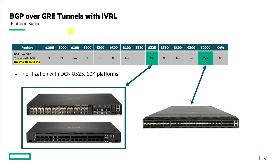This slide covers the platform support for the feature — BGP over GRE tunnels with IVRL. This is new to the 10.14.1001 release. We prioritized support with the 8325 and the 10K platforms pictured here. Campus switches don't support this feature as of this release, and some other data center switches don't either, though that could change in the future.